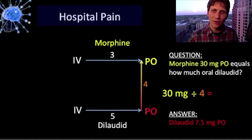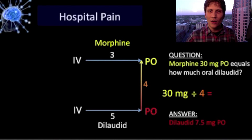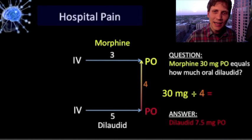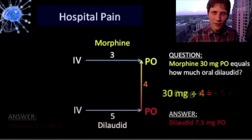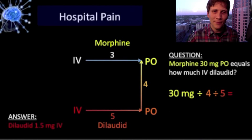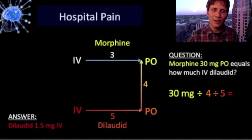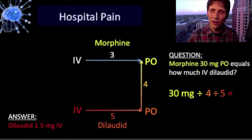If we want to go all the way to IV dilaudid, we divide by five. So 30 milligrams PO morphine is equivalent to 1.5 milligrams of IV dilaudid.